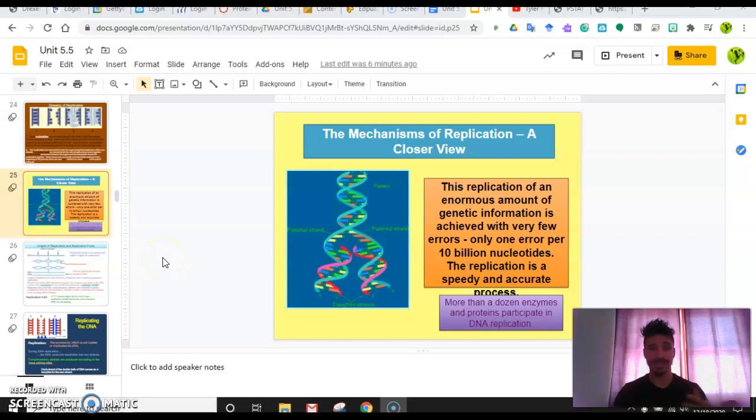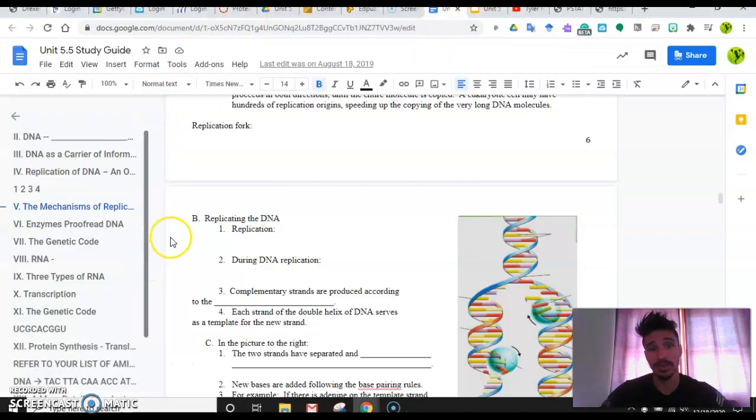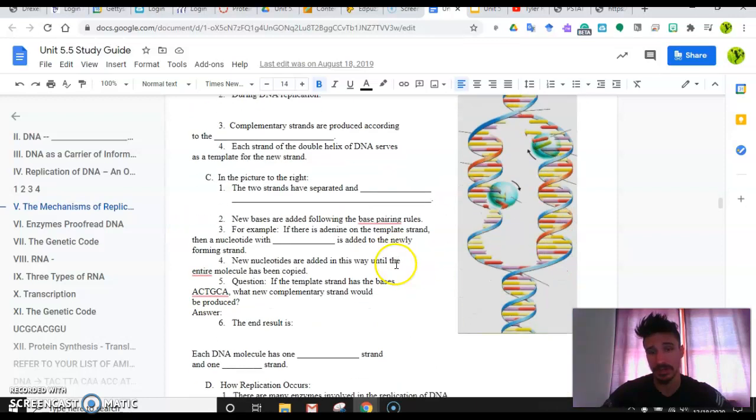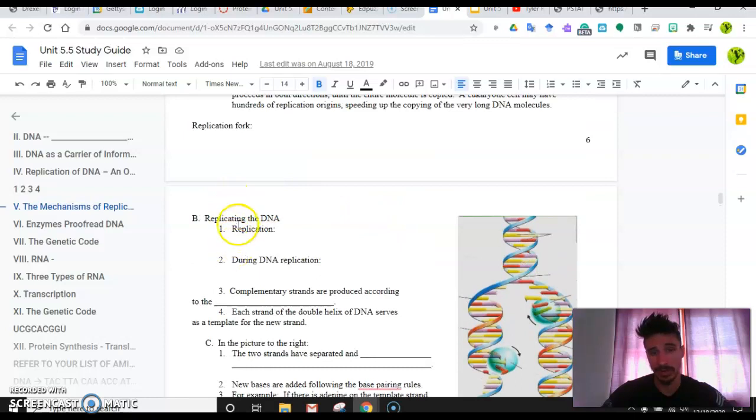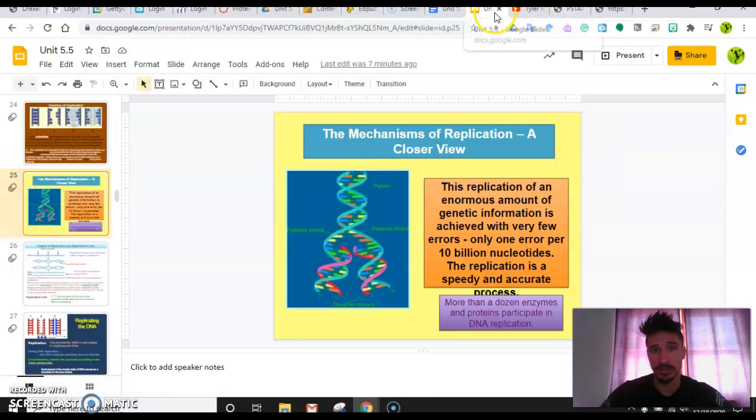All right, ladies and gentlemen. So in the last screencast, we left off on this slide here that you see on my screen, the mechanism of replication. We are actually going to skip slide 25 and 26 and jump right to slide 27. Now, where does that put you on your study guide? On your study guide, slide 27 will start directly on top of page seven, right here. So page number seven, we're going to start right here at the top of it. So let's just jump into it.